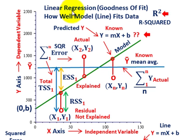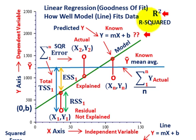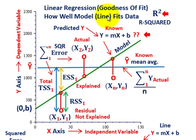What we're going to be going over here is linear regression, and we're going to look at the goodness of fit test. The goodness of fit test that we're going to look at is R-squared. We're going to look at how we develop our equations to determine what R-squared is, and what this goodness of fit or R-squared is telling us is how well our model — a line represented by our data — fits that data.